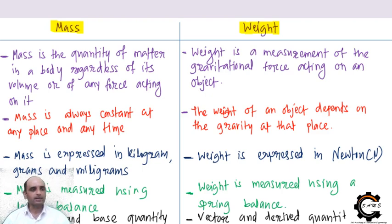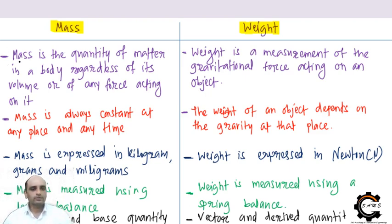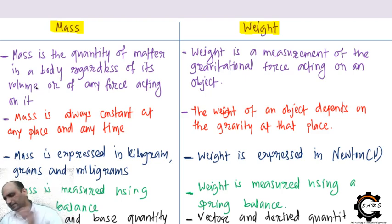This slide shows the difference between mass and weight. Mass is the quantity of matter in the body, regardless of its volume or the force acting on it. Weight is the measurement of the gravitational force acting on the object. Mass has no relation to how much force is acting on it or what volume it occupies — it is simply a quantity. Weight, however, is directly the gravitational force.